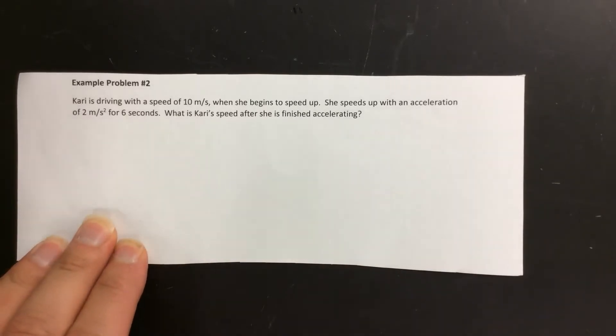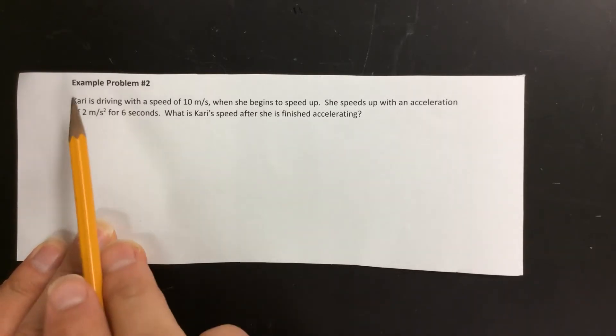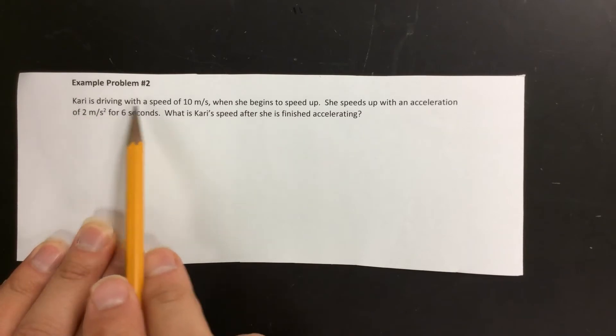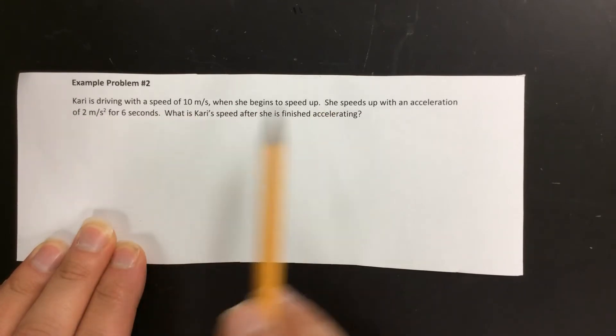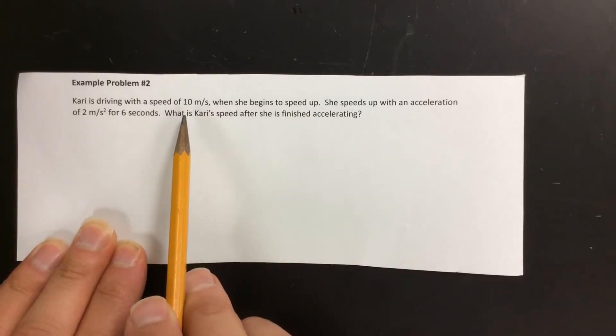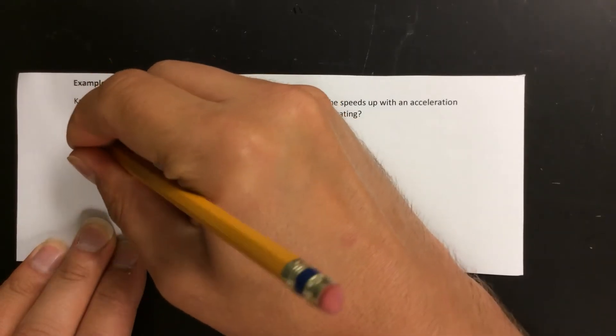Now we're going to show our work using the same steps we've always done before. We're going to start by listing what we know. So let's start. Carrie is driving with a speed of 10 meters per second when she begins to speed up. That means she's going 10 meters per second at the beginning of the problem.